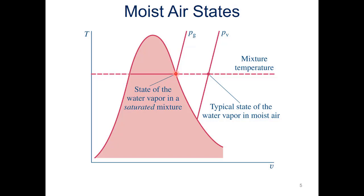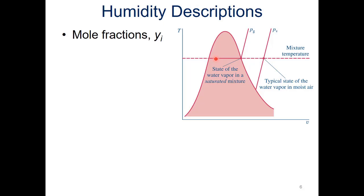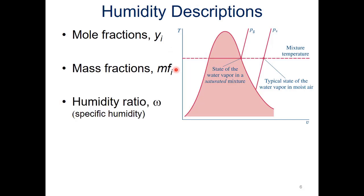Partial pressure is a part of the total pressure of the moist air, so 14.7 PSI is the total pressure and we can have some partial pressure due to the vapor. Ways we can quantify how much vapor we have include mole fractions and mass fractions — we've looked at those already with ideal gas mixtures. A new one for us is humidity ratio, represented by omega, also called specific humidity. Let's go to the next slide for more depth on that calculation.